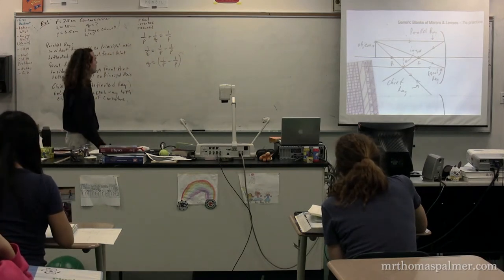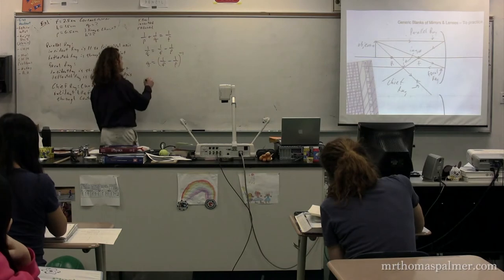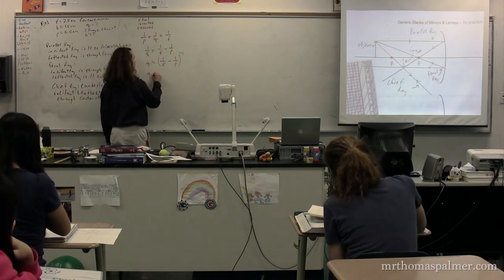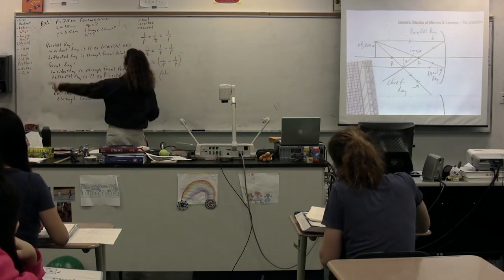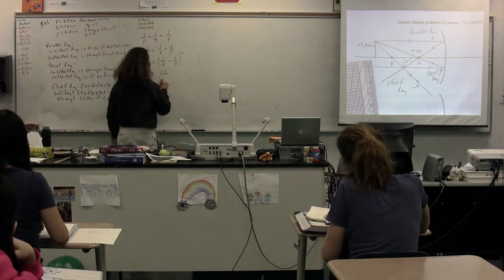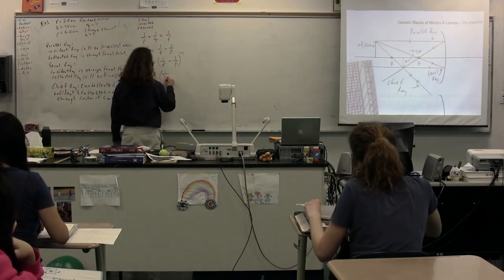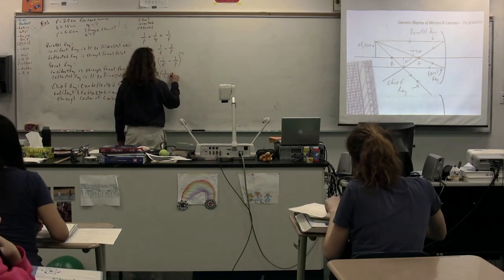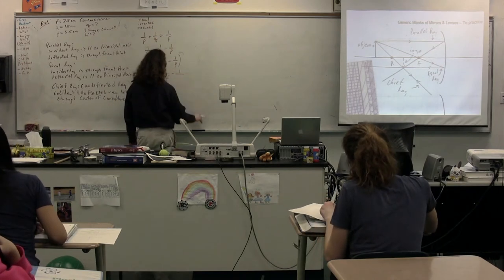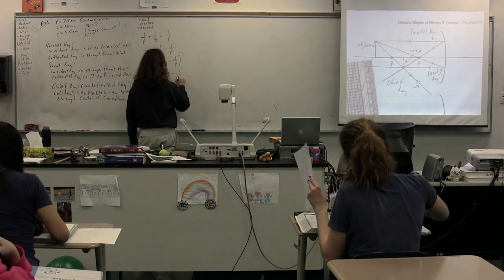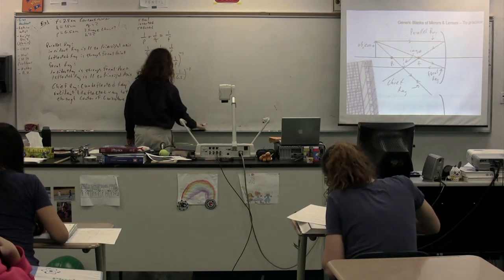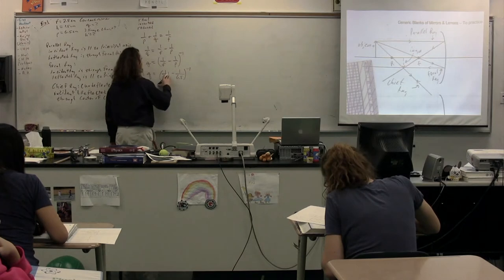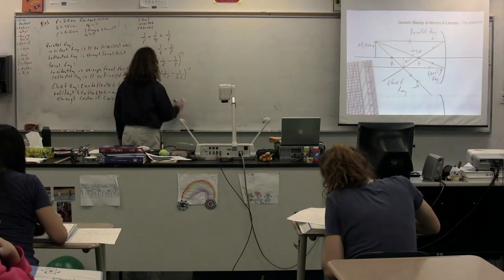Just solving for the image distance. The image distance is going to be equal to 1 over the focal length, which was 2.5 centimeters, minus 1 over the object distance, which was 6.5 centimeters, all to the negative 1 power.